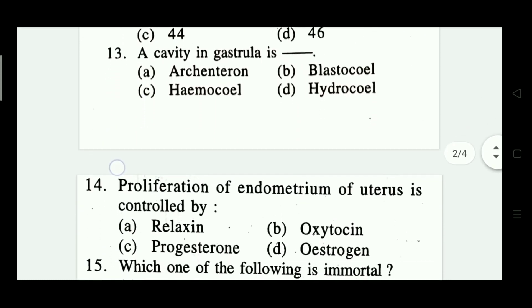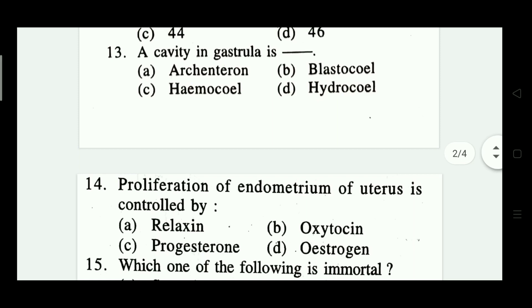Question number thirteen: a cavity in gastrula is this — archenteron, blastocoil, haemocoil, hydrocoil. Which one is correct? Option A — archenteron is correct.